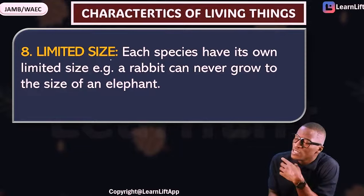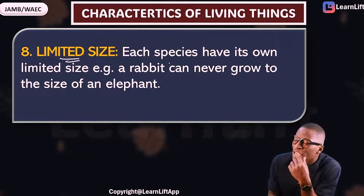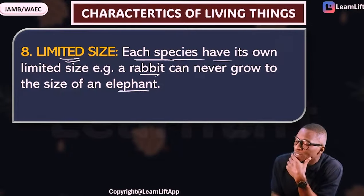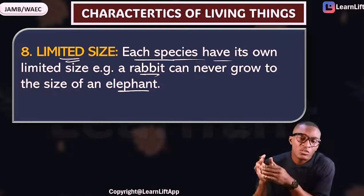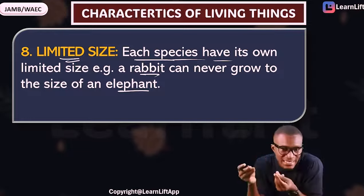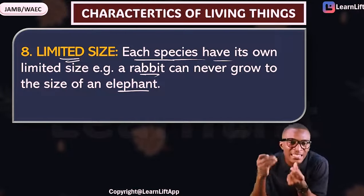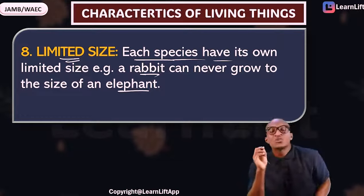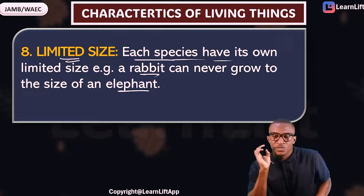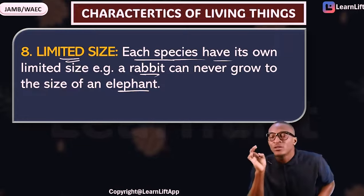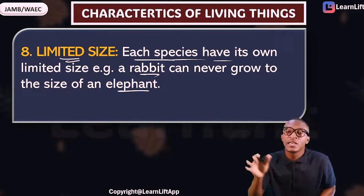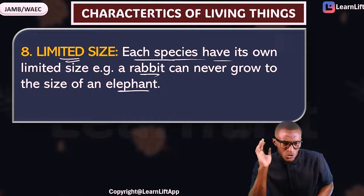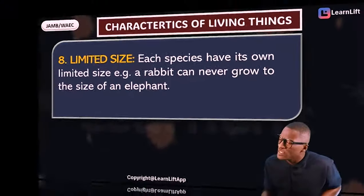The next characteristic is limited size. Every species has its own size — a rabbit can never grow to the size of an elephant. Every species has its own size: rabbits have their size, elephants have their size, humans have their size. You can only grow within your limited size. Non-living things don't grow — just the way they came, that's the way they are.